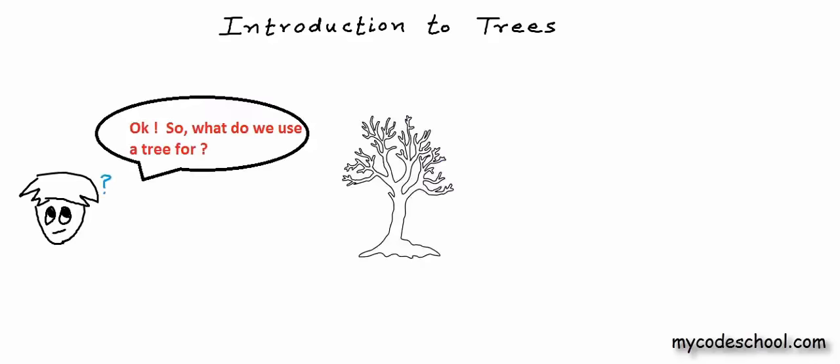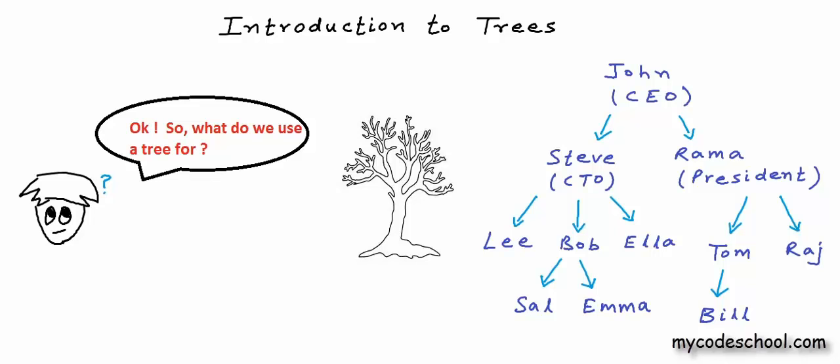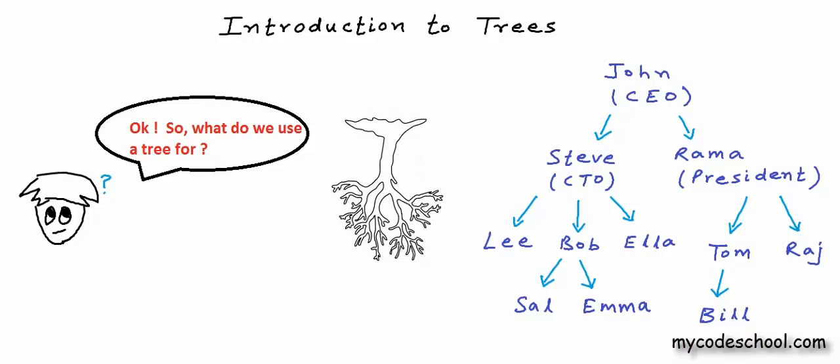Tree is one data structure that's quite often used to represent hierarchical data. For example, to show employees in an organization and their positions in organizational hierarchy. Let's say John is CEO and has two direct reports, Steve and Rama. Steve has three direct reports: Lee, Bob and Ella. Rama also has two direct reports, and Bob has two direct reports. This particular logical structure is a tree. You have to look at this structure upside down and it will resemble a real tree. The root is at top and we branch out in a downward direction — logical representation of tree data structure is always like this.